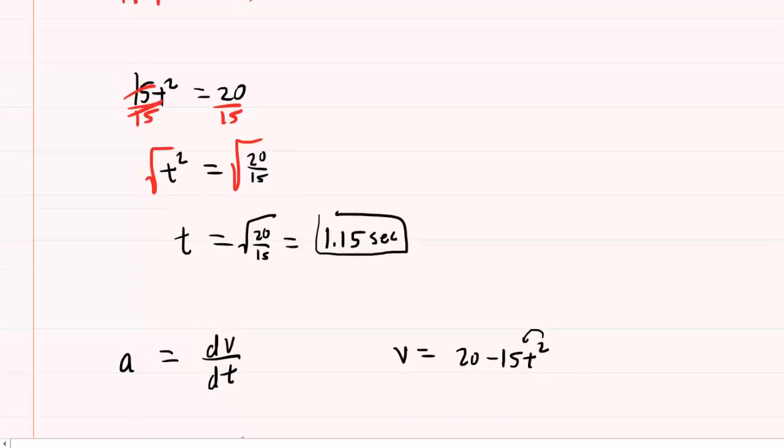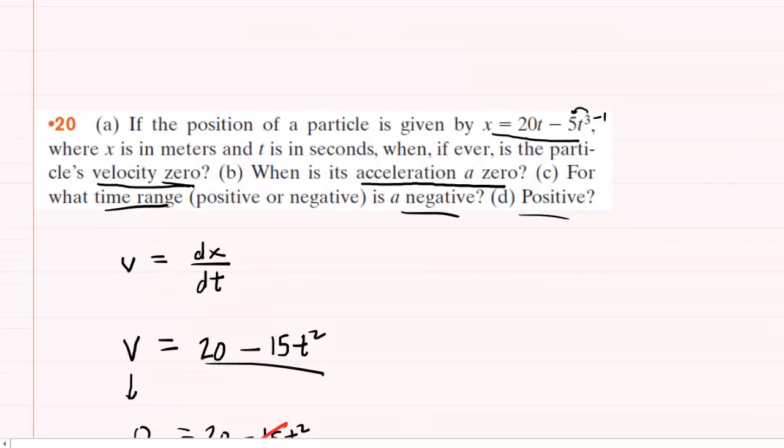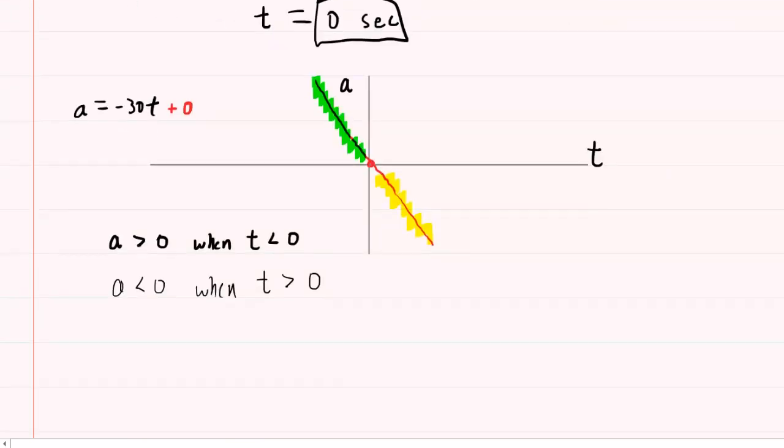And so for part C, we wanted the time range for which A is negative. So this would actually be the correct answer right here for part C.